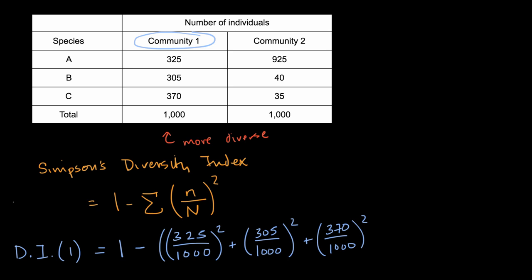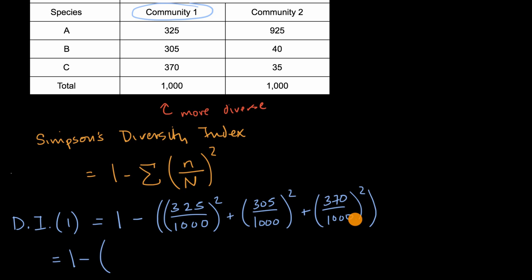And I can simplify this a little bit. This is going to be equal to one minus, so all of these 1,000 squared, 1,000 squared is a million, so it's going to be everything over 1,000,000. And then we're going to have 325 squared, plus 305 squared, plus 370 squared.